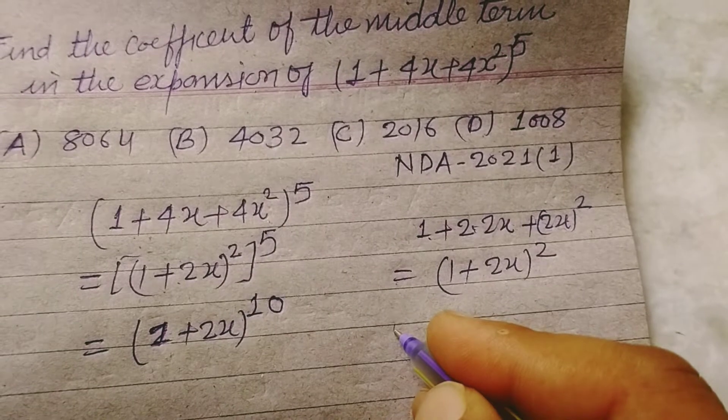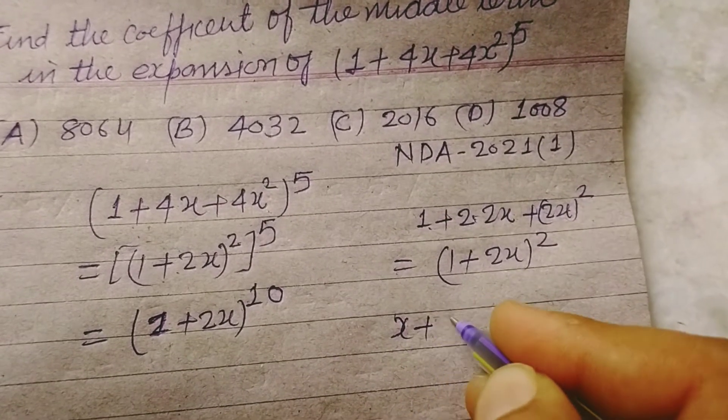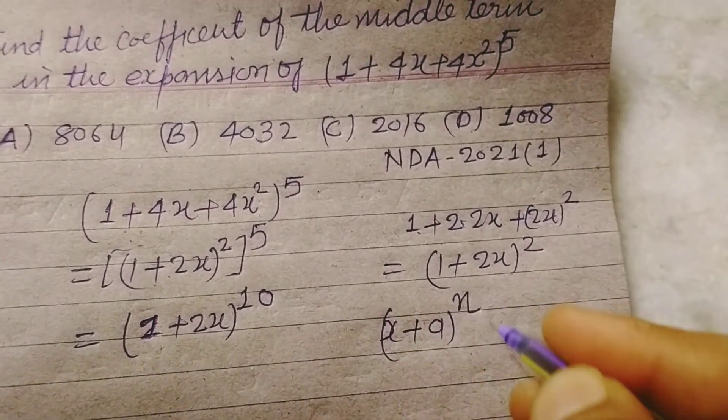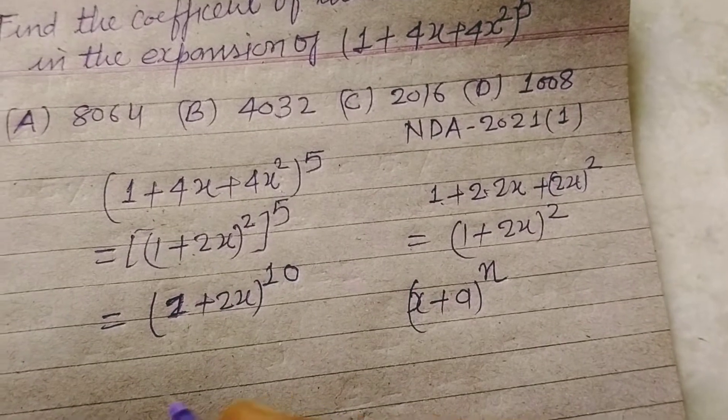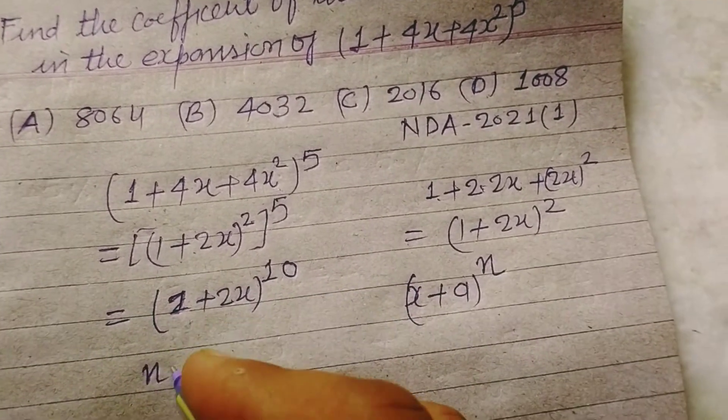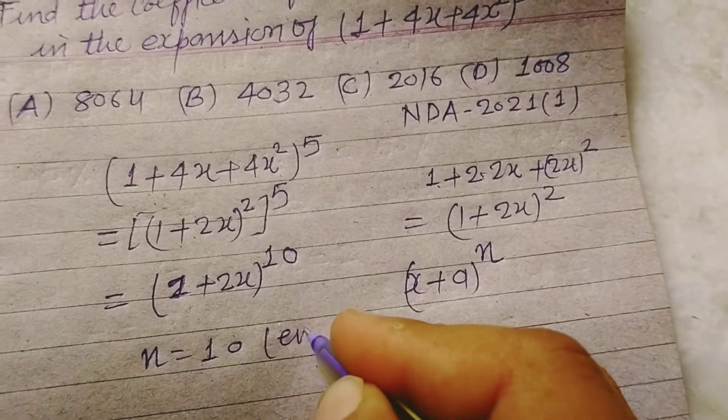So x plus a to the power n type. So here n is 10, which is even.